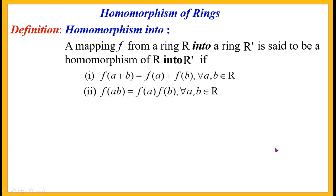If you recall into-homomorphism of groups, we have only one condition because in a group we have only one binary operation, whereas in a ring we have two binary operations, namely addition and multiplication. Therefore we must have two conditions, namely condition number one and condition number two.